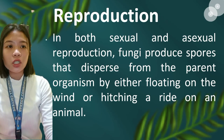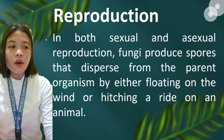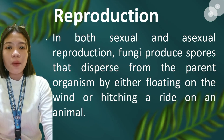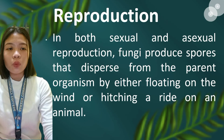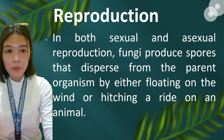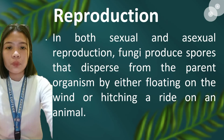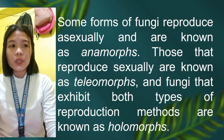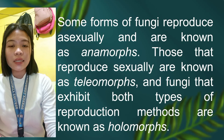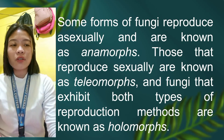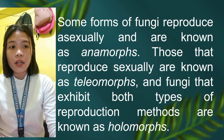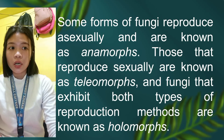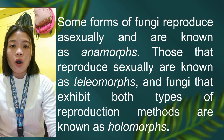In both sexual and asexual reproduction, fungi produce spores that disperse from the parent organism by either floating on the wind or hitching a ride on an animal. Some forms of fungi reproduce asexually and are known as anamorphs. Those that reproduce sexually are called telemorphs. Fungi that exhibit both types of reproduction are known as holomorphs.